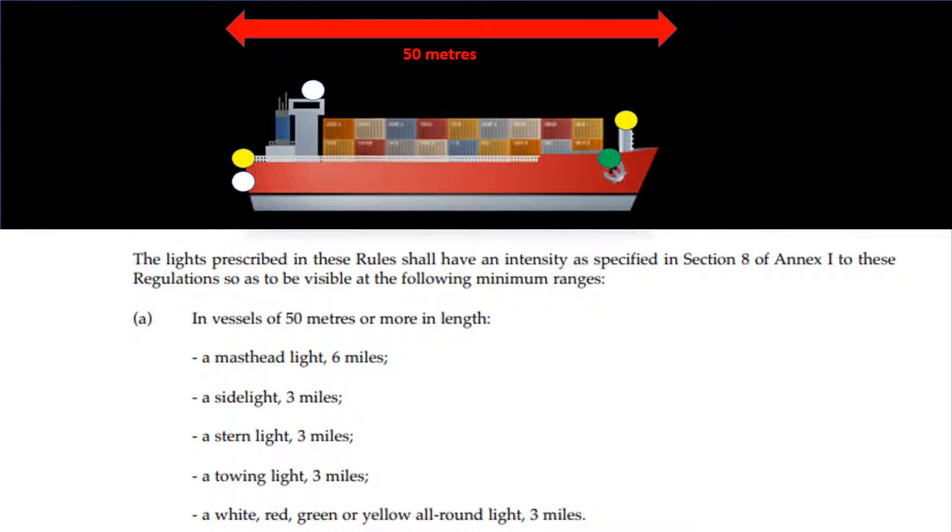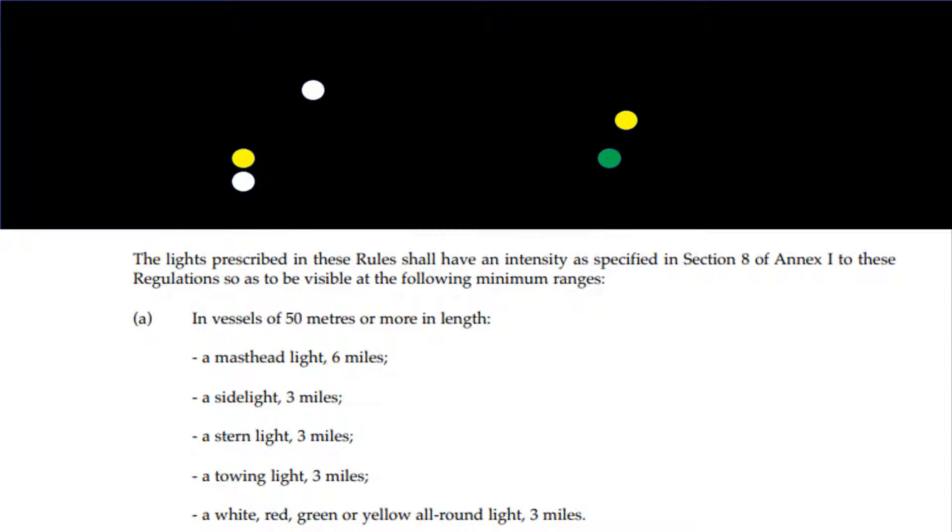The lights prescribed in these rules shall have an intensity as specified in section 8 of Annex 1 to these regulations so as to be visible at the following minimum ranges.